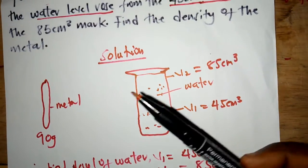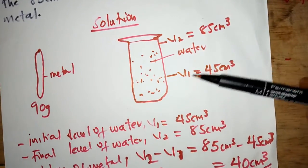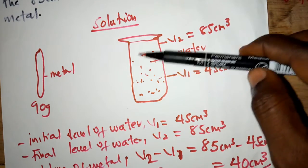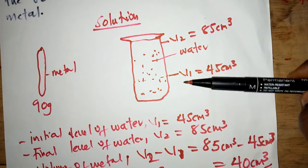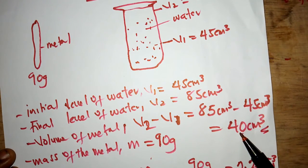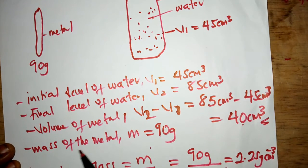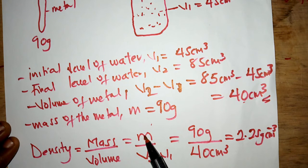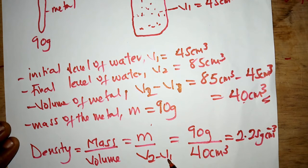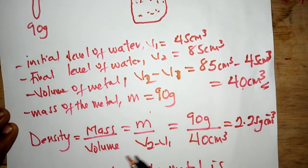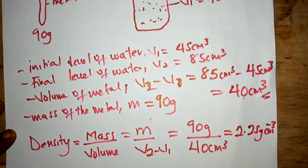So to recap: we have the metal, the initial volume, and the final volume measured in the cylinder containing water. Subtracting V2 minus V1 gives 85 minus 45, which is 40. The mass of the metal is 90 grams. Density equals mass over volume: 90 grams divided by 40 centimeter cube equals 2.25 grams per centimeter cube. Thank you very much for joining me in this session.